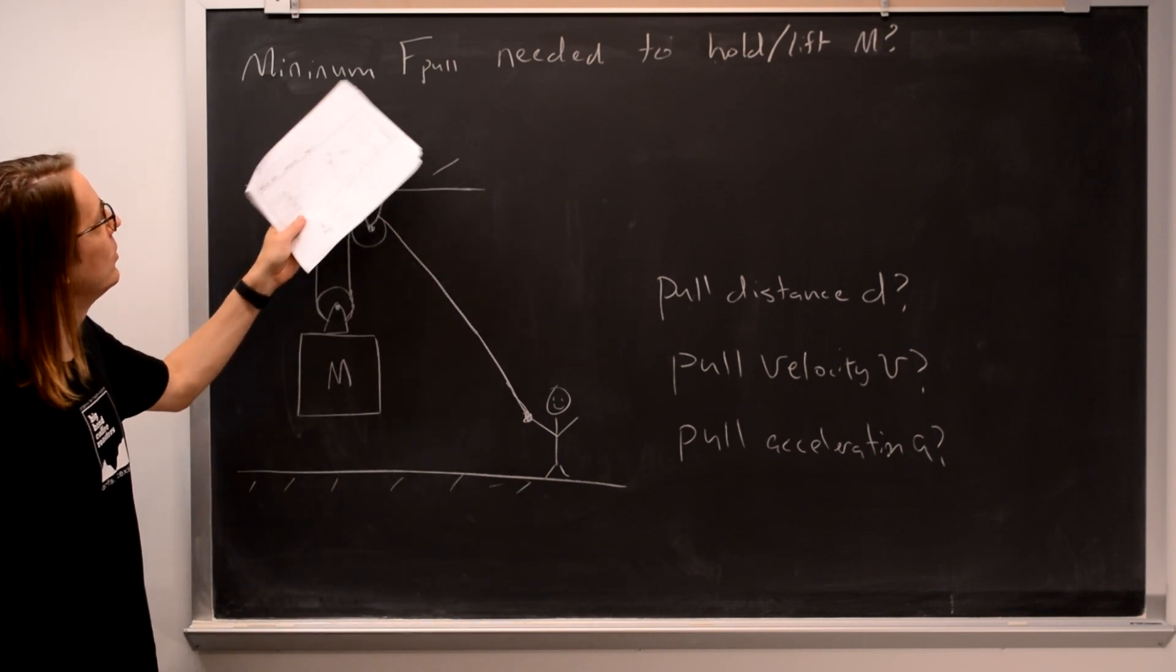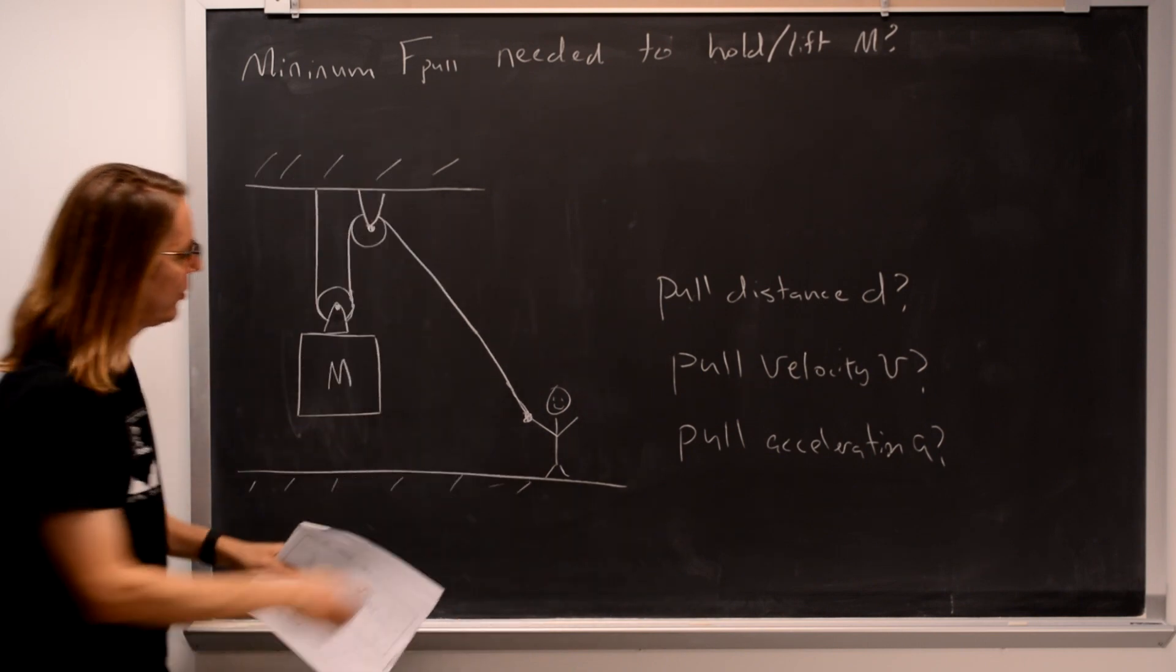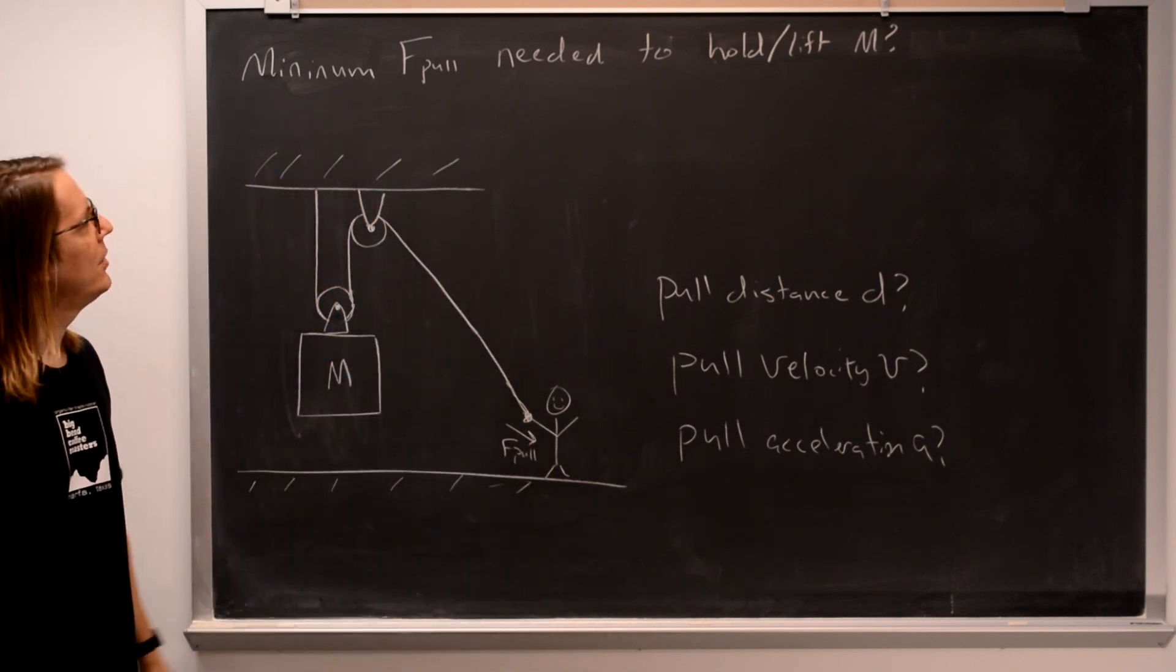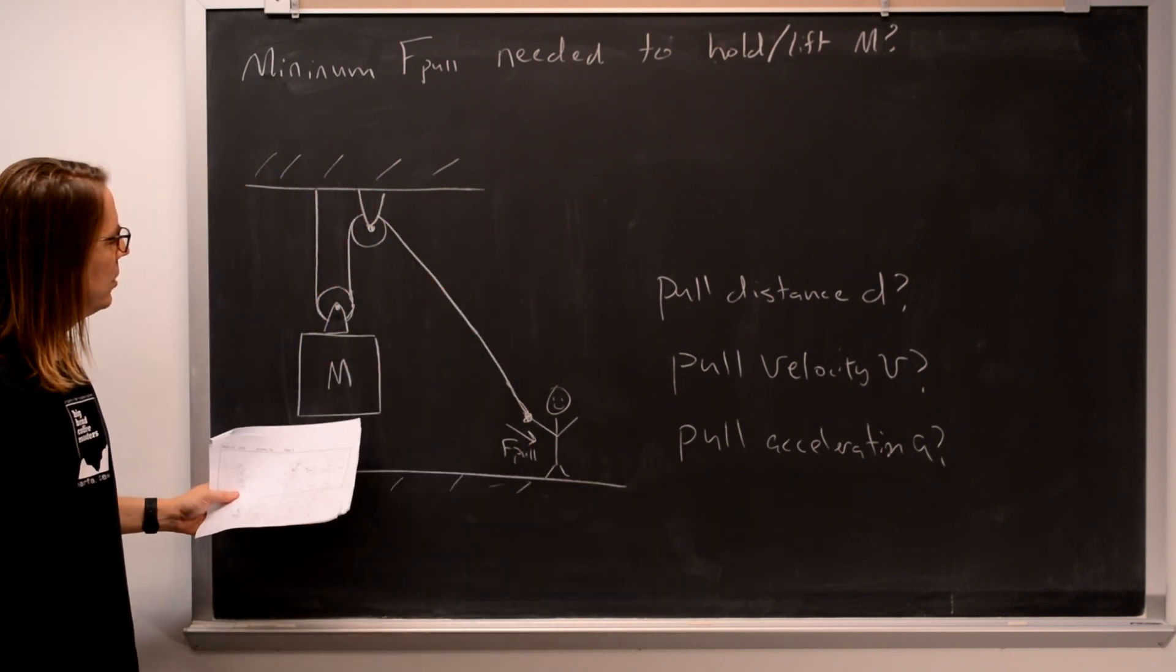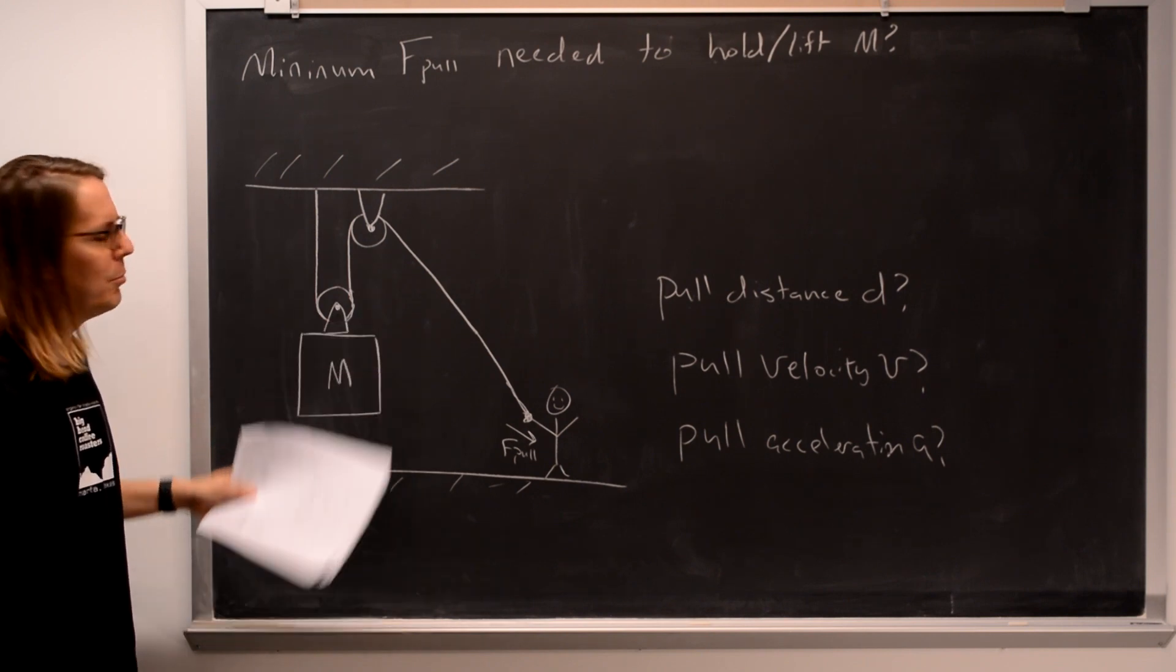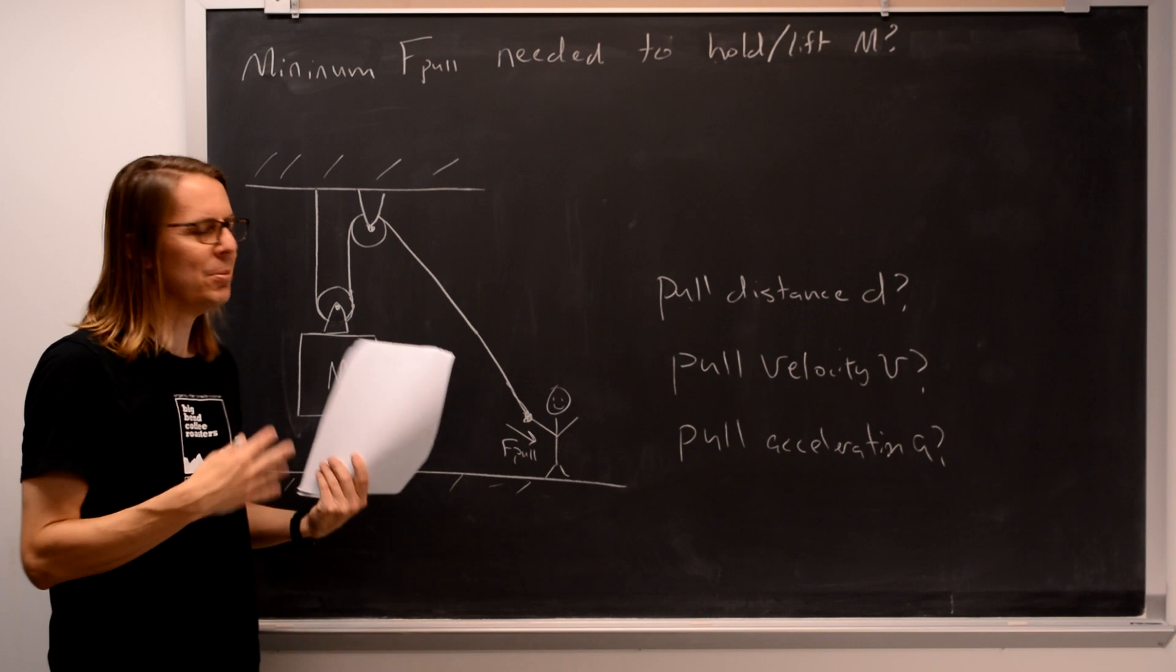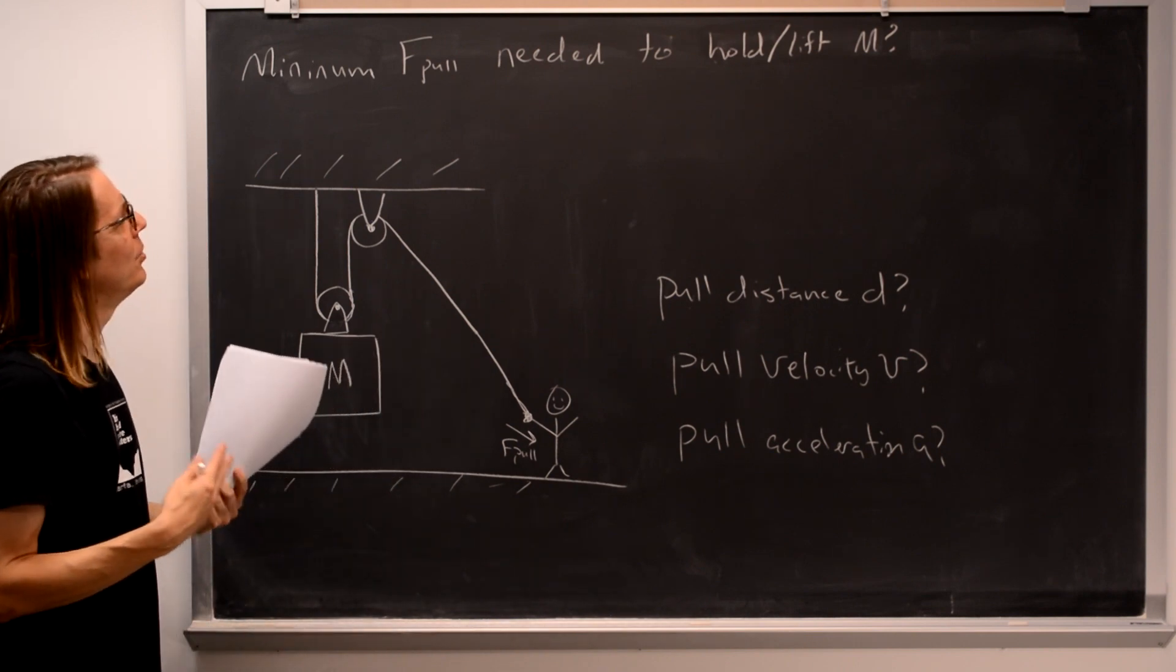So the simple question here is what minimum pull force do we need to have a person apply to the end of the rope to lift, or you could say hold, this mass in the air. That's kind of a limiting or a minimum case again, kind of like other problems. What is needed?